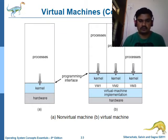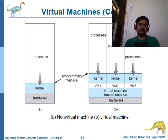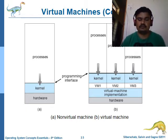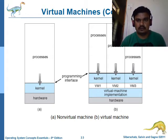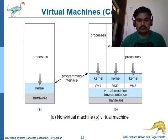The virtual machine implementation layer helps create different virtual machines — VM1, VM2, VM3 — each having its own kernel, and each kernel processing its own applications. Comparing Parts A and B, the non-virtual machine does not support multiple tasks at a single time, but the virtual machine allows you to do multiple tasks at the same time.